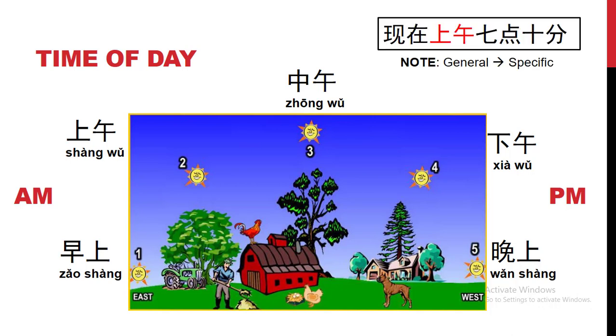So when you're putting this with the time, we always go from general to specific. So I would say if it was 7:10 in the morning, I would say 現在上午七点十分. So this is generally the time of day, and then we get to the hour, and then we get to the minutes. So it goes from more general to more specific.